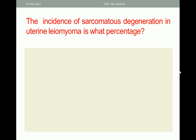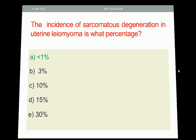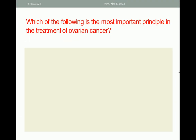The incidence of sarcomatous degeneration in uterine leiomyoma is what percentage? A. Less than 1%; B. 3%; C. 10%; D. 15%; E. 30%. The best one response here is A — less than 1%.